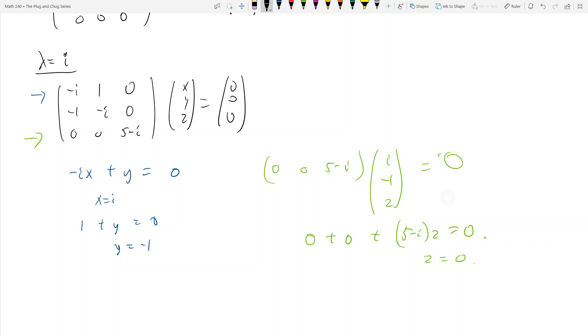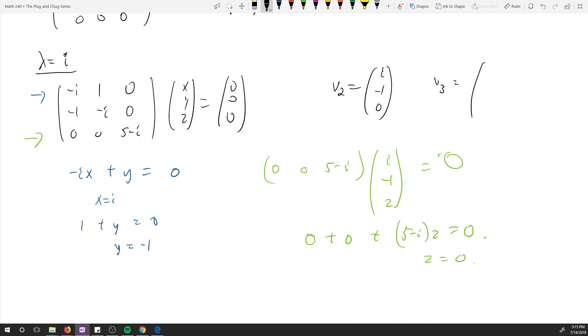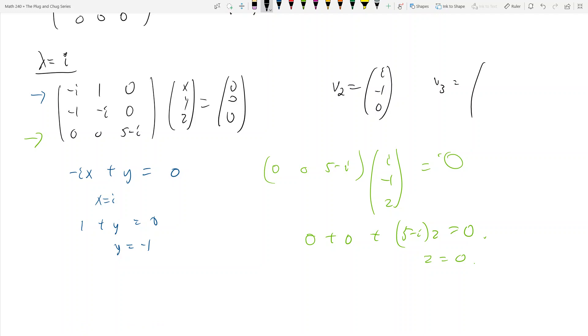So from these calculations here, we see that my eigenvector v2 can just be i, negative 1, 0. And that works very well. And so then v3 comes for free, right?